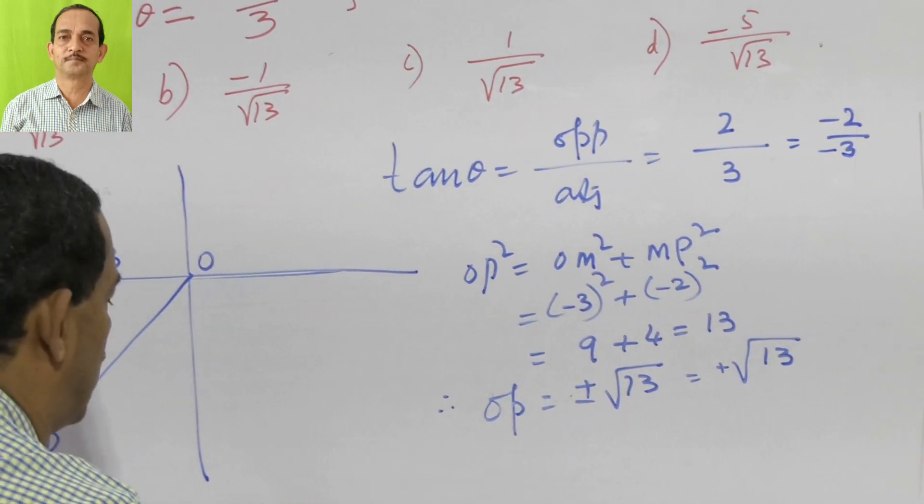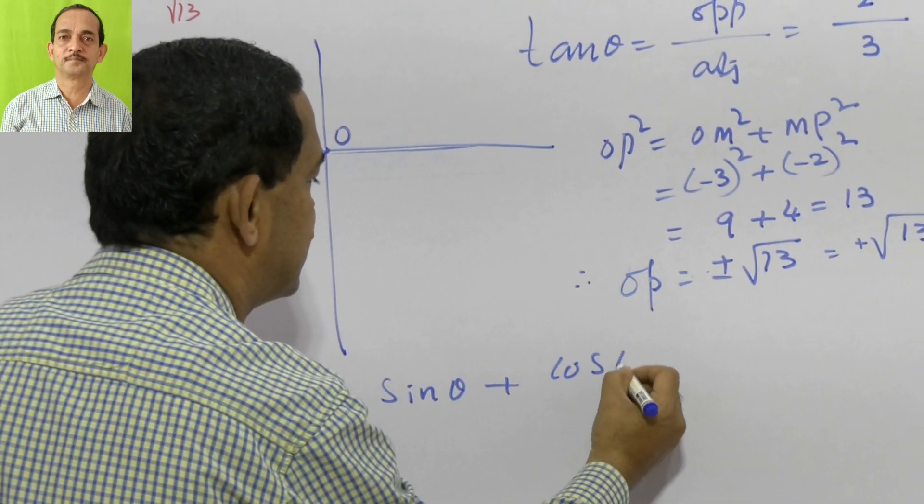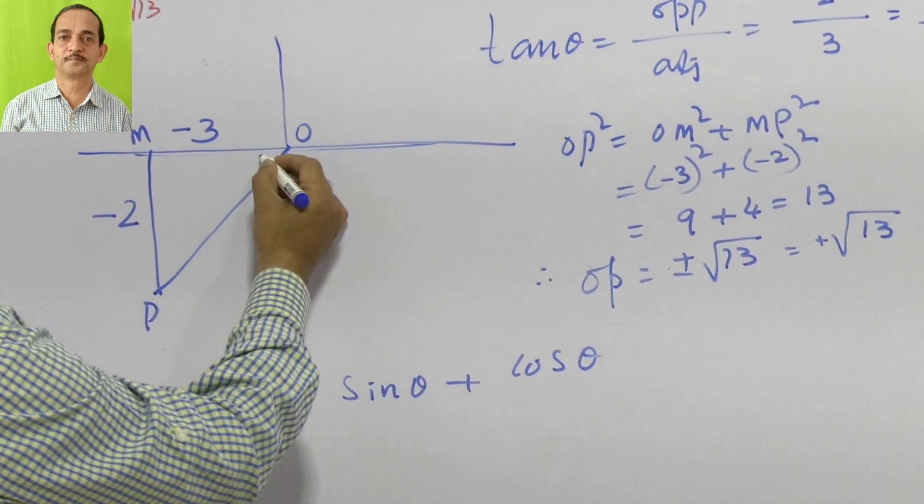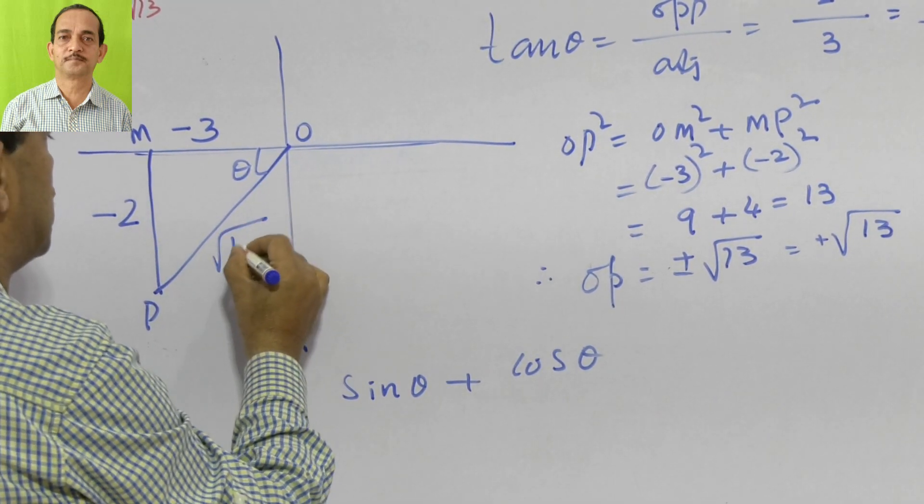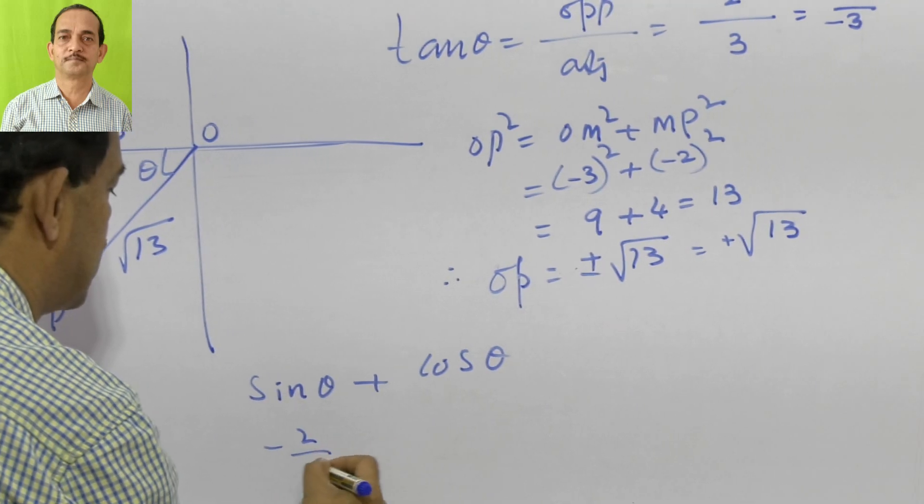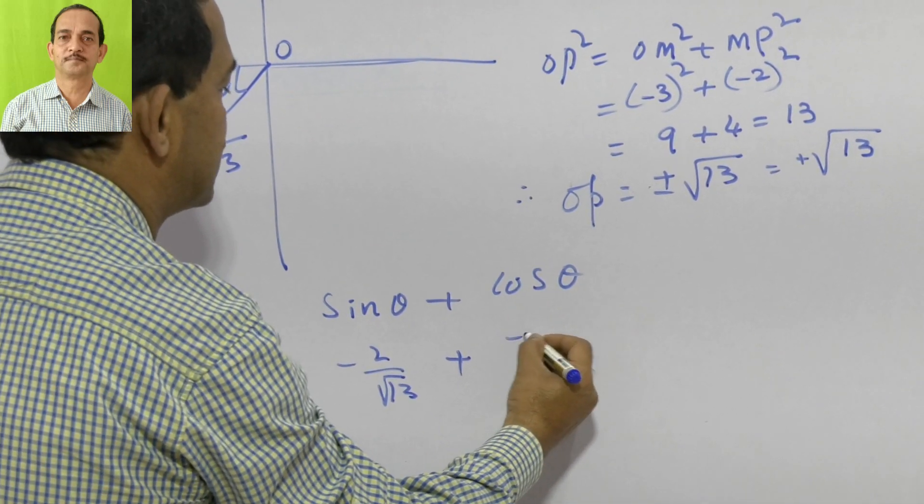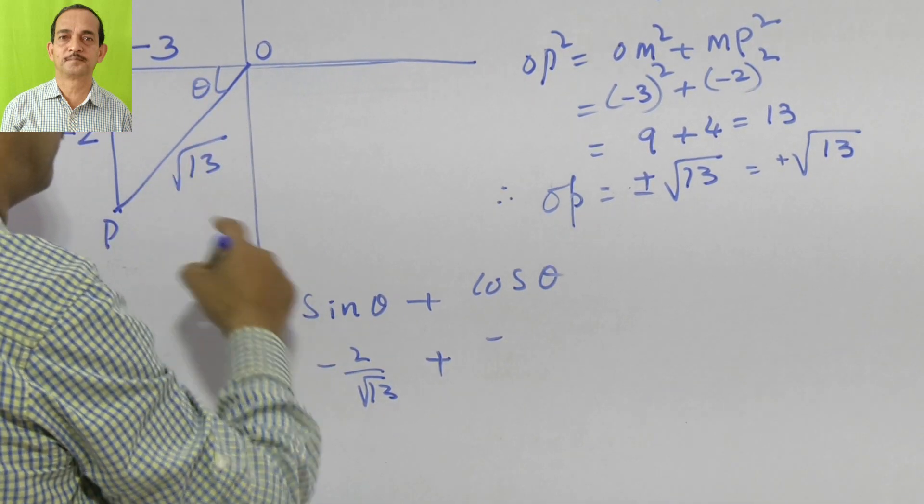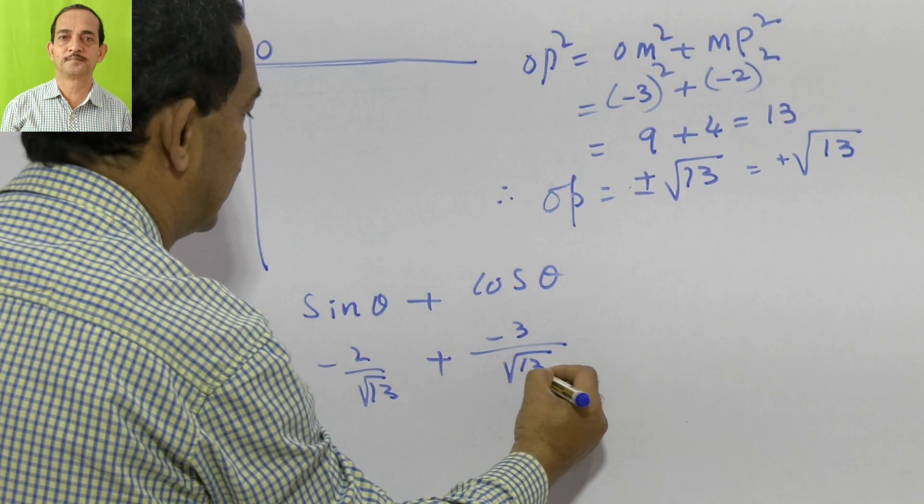Now we have to find sin theta plus cos theta. What is sin theta now? For the angle theta, sin theta is minus 2 by root 13, minus 2 by root 13. Plus cos theta is adjacent side by hypotenuse, that is minus 3 by root 13.